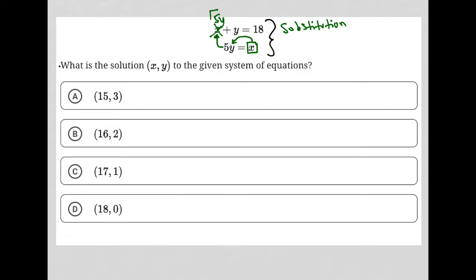What that will always do is lead you to having a single equation with a single variable that we can solve for. So that equation becomes 5y plus y equals 18, which of course is 6y equals 18. Divided by 6, I have y equals 3.